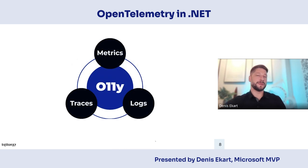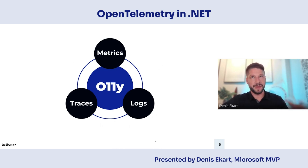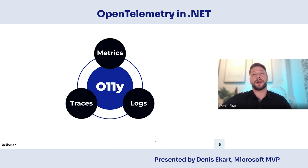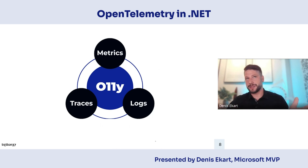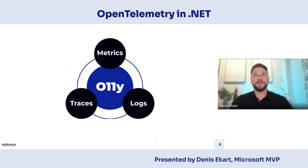When we talk about observability, we usually talk about three basic signals — three basic types of telemetry being exported. We all know logs; they have the biggest history and are most used in all software systems. A log is basically a timestamped text record. You have a timestamp when the record was created, a message or message template, and then some optional metadata attributes or baggage that adds context to the log.